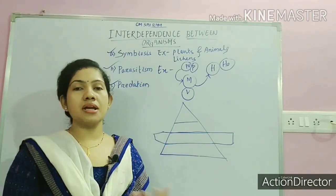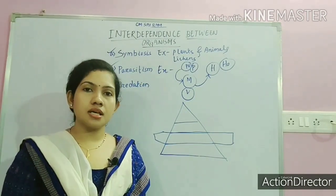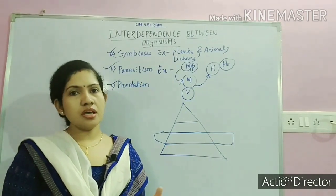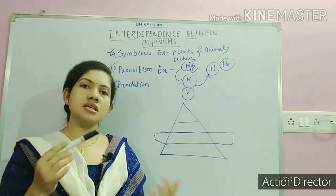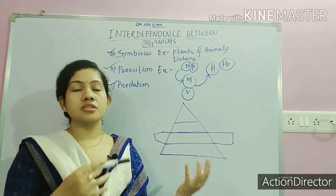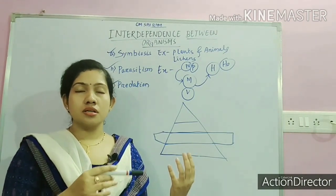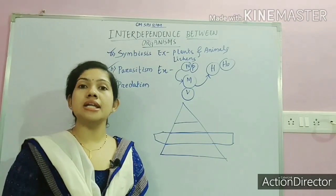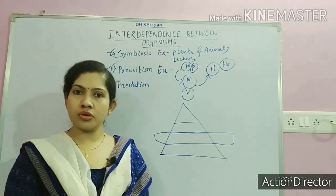We can take many examples like frog and snake, eagle and snake. Predation is a rule of nature — it is needed to sustain and maintain an ecosystem.